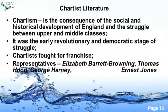Chartist literature appeared due to changes in the social and economic spheres and it is called the consequence of the development of England. It was the result of the struggle between upper and middle classes. Generally chartist literature is thought to be the revolutionary-oriented trend and generally they fought for franchise. The representatives are Elizabeth Barrett Browning, Thomas Hood, George Honey, and Ernest Jones.